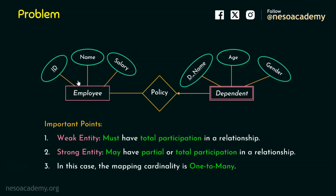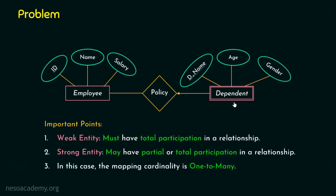Coming to point number two — the strong entity set, which is employee here. This employee may have partial or total participation in the relationship. We cannot guarantee that every employee must have a dependent. In this case, the strong entity set may have partial or total participation in a relationship.